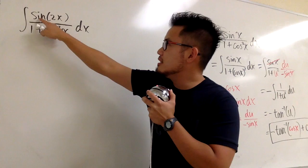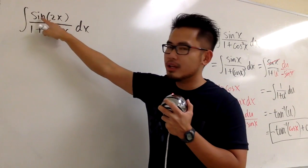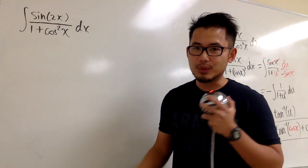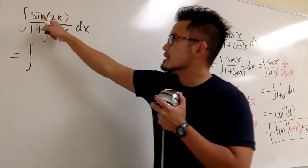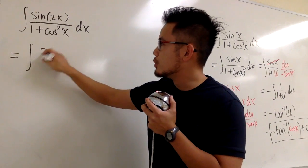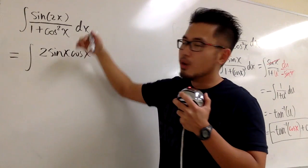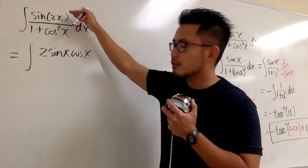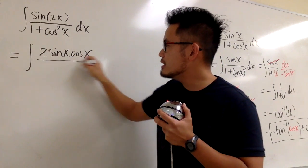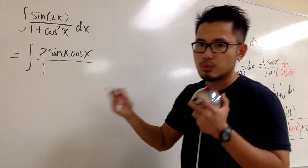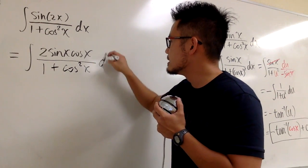We recognize that sine of 2x is a double angle. Fortunately, we have a double angle identity for sine. So we rewrite: sine of 2x equals 2 times sine x times cosine x. Once we apply the double angle formula, the inputs are all just x. The integral becomes 2 sine x cosine x over 1 plus cosine squared x, dx.